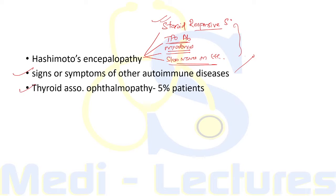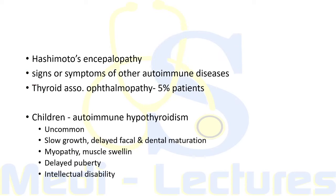Thyroid-associated ophthalmopathy, usually seen in Graves' disease, can be present in around 5% of patients with autoimmune hypothyroidism. In children, autoimmune hypothyroidism is uncommon, but if present it presents as slow growth, delayed facial and dental maturation, myopathy with muscle swelling, delayed puberty, and intellectual disability if onset is before 3 years and hormone deficiency is severe.